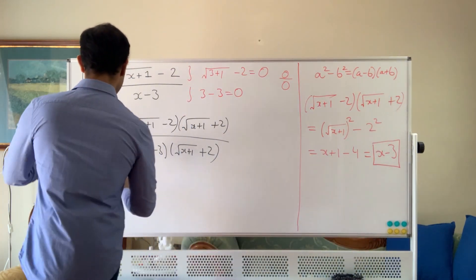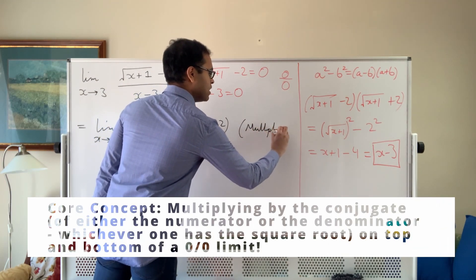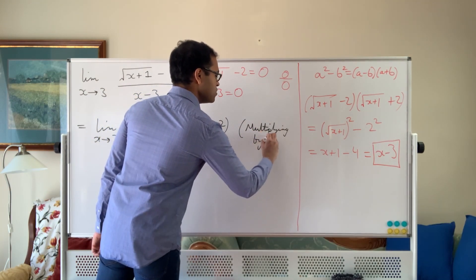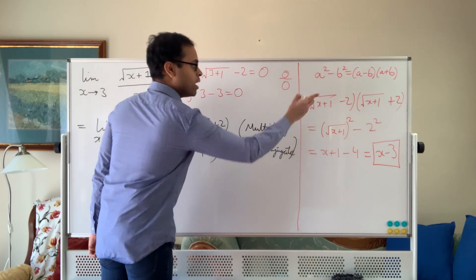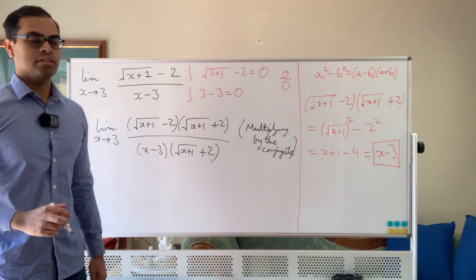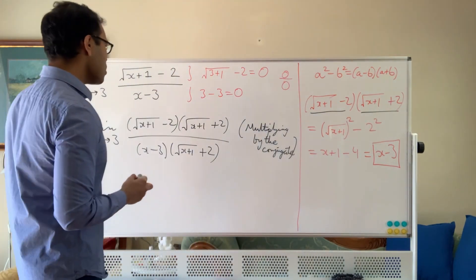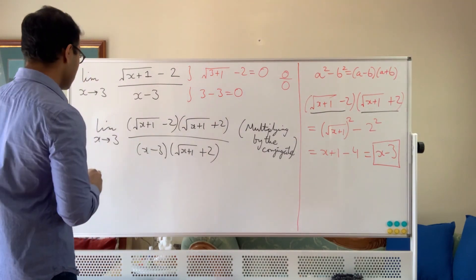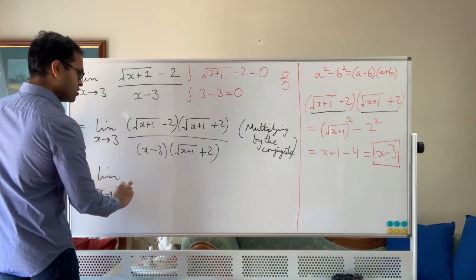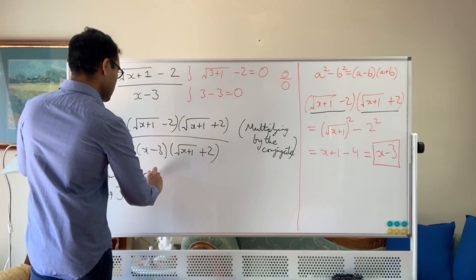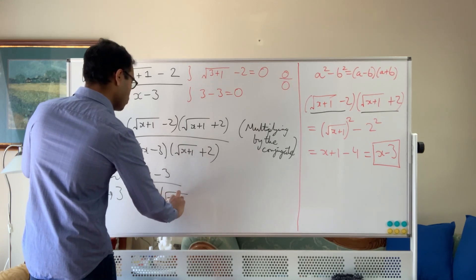This is called multiplying by the conjugate. When you flip the minus sign to a plus sign and take root x plus 1 plus 2, that's called the conjugate of root x plus 1 minus 2 — these two are conjugates of each other. This is always the trick with the radical: multiply by the conjugate to get rid of it when you have a 0 over 0 limit. We now have the limit as x goes to 3 of x minus 3 divided by x minus 3 times the square root of x plus 1 plus 2.